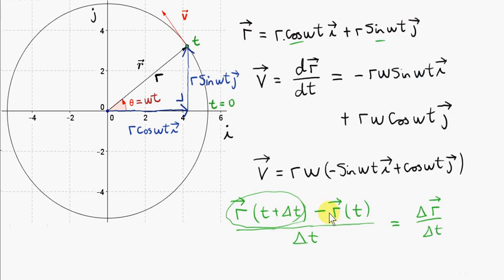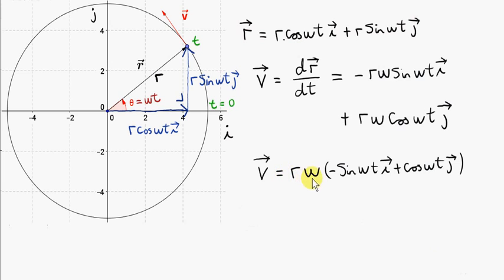This is not like ordinary differentiation, because normally we don't have a vector quantity on top — here we have a vector quantity in the numerator and a scalar quantity, delta t, underneath. We have now found vector v. Let's consider its magnitude.